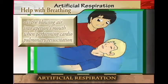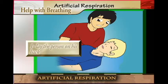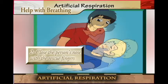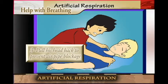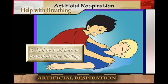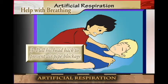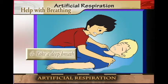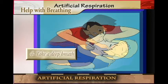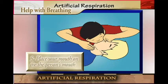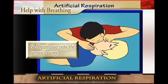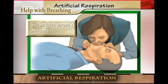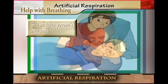The first thing that you do: you lay the person on his or her back and close the person's nose with your fingers. You pull the person's head backwards — when you pull it backwards it prevents the blockage of the airway pipes. Then you yourself take a deep breath and place your mouth on the person's mouth.